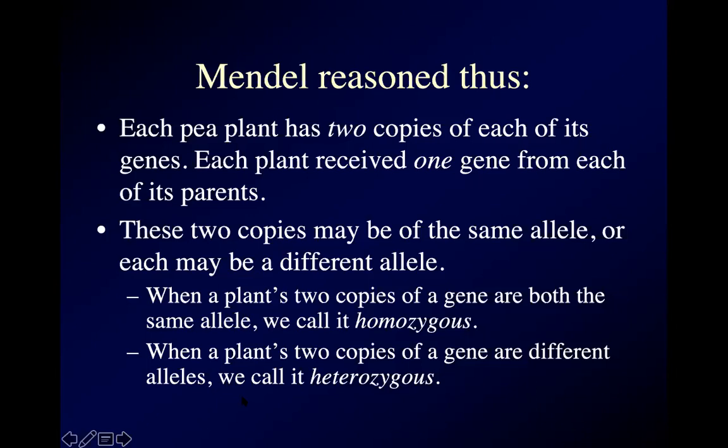The two copies can be the same or each can be different, just like any two coins can either have both heads or both tails — the same — or a head and a tail — different. When two copies of a gene are both the same, we call that individual homozygous. If they're different, we call that plant — that pea plant or what have you — heterozygous.